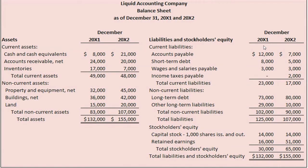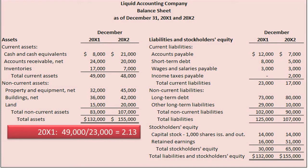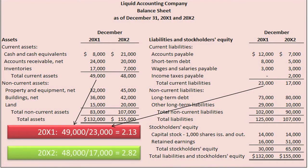Let's use the following comparative classified balance sheet for Liquid Accounting Company to compute its current ratio and see what it reveals. LAC's current ratio as of December 31st, 20x1, of 2.13 is computed as follows: total current assets of $49,000 divided by total current liabilities of $23,000 equals 2.13. Its 20x2 ratio is 2.82.